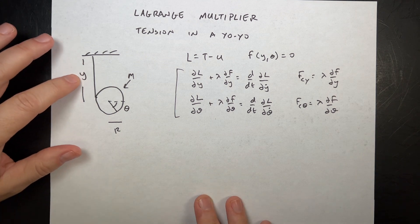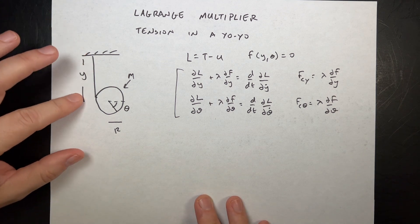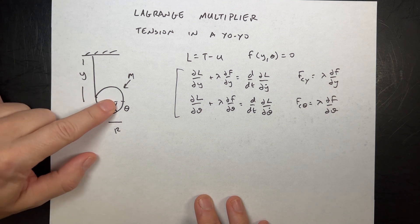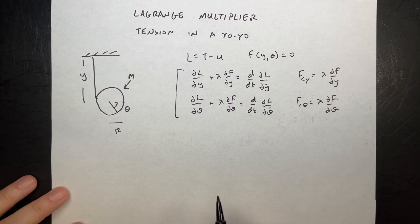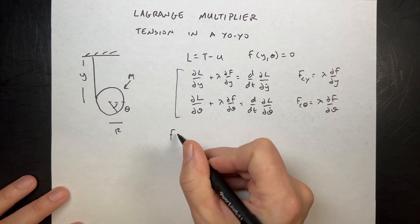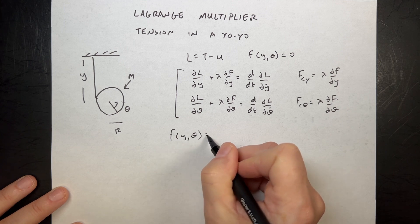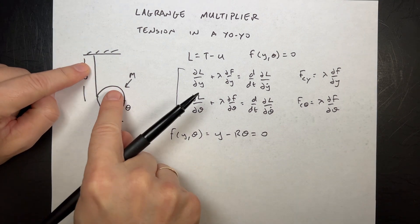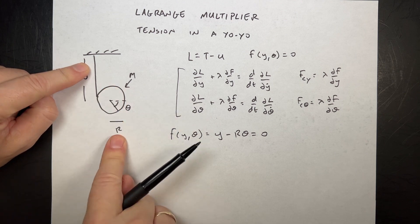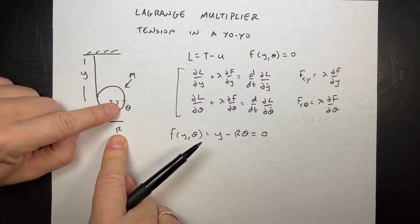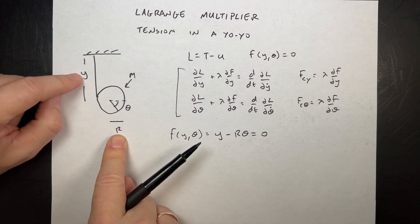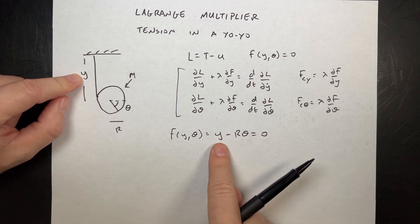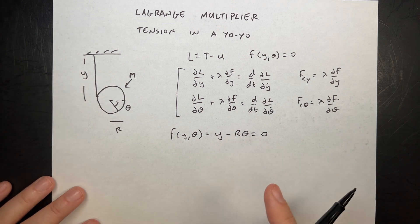I've already picked my variables: Y is the distance from the top, and theta is the angle. I'm going to write the constraint: F(Y, θ) = Y minus R·theta equals zero. Because if this is rolling without slipping, the distance moved based on the angle is R·theta, and that has to equal Y. Subtracting R·theta from both sides gives that constraint.